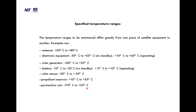Specified temperature ranges differ greatly from one piece of equipment to another: antenna −150°C to +80°C; electronic equipment −30°C to +55°C on standby, +10°C to +45°C operating; solar generator −160°C to +55°C; battery −10°C to +25°C standby, 0°C to +10°C operating; solar sensor −30°C to +55°C; propellant reservoir +10°C to +55°C; pyrotechnic unit −170°C to +55°C.